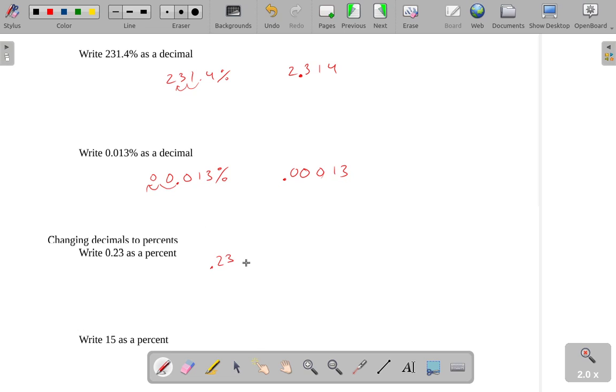I'm starting with 0.23. If I want to write a percent symbol in there, I have the 2, 3 here. I'm going to want to move my decimal place two places the other direction, which is to the right. I end up with 23%.